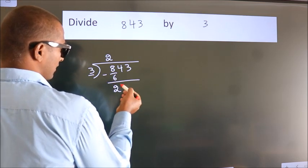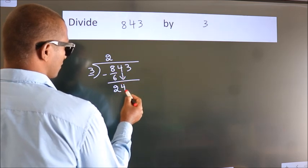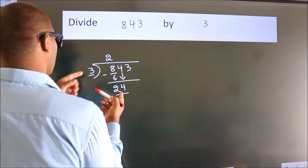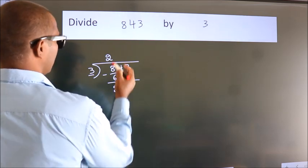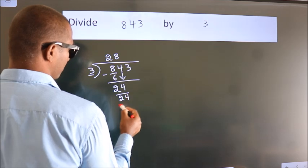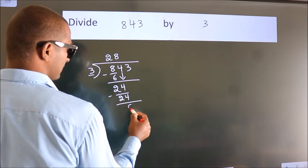After this, bring down the beside number. So 4 down. So 24. When do we get 24? In the 3 table. 3 times 8 is 24. Now we subtract. We get 0.